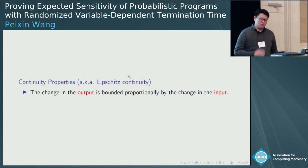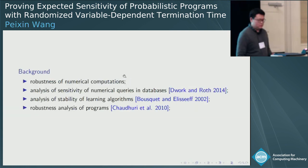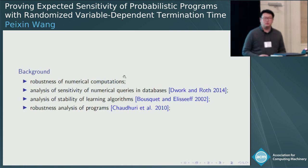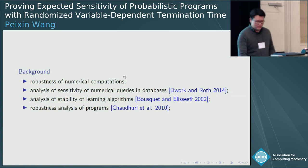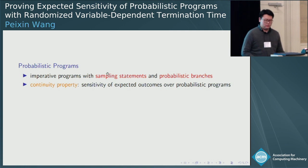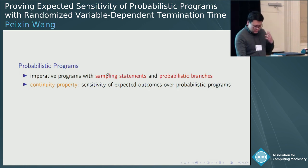The motivation of this work is from the analysis of continuity properties. It specifies that the change in the output is bounded proportionally by the change in the input. Related applications include robustness of numerical computations, analysis of stability of learning algorithms, and we focus on robustness analysis of programs, especially probabilistic programs with sampling statements and probabilistic branches. We are interested in the sensitivity of expected outcomes over such probabilistic programs.